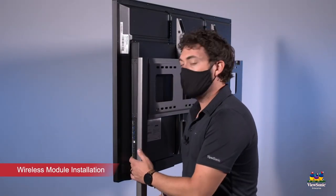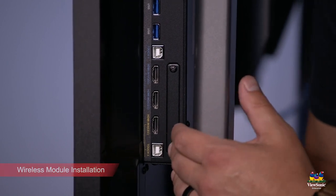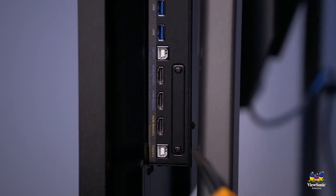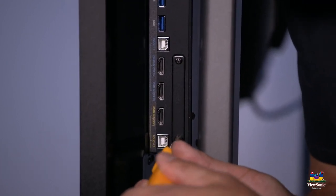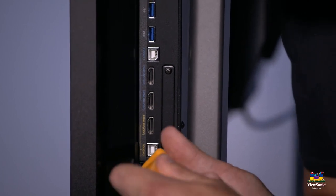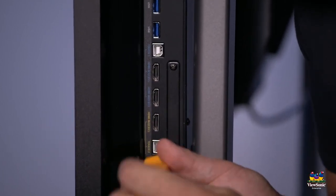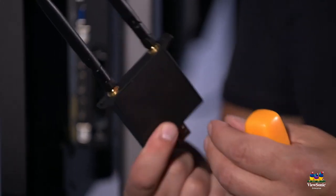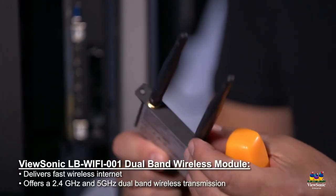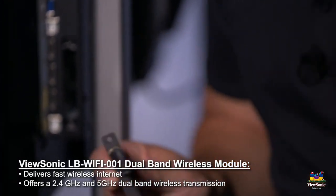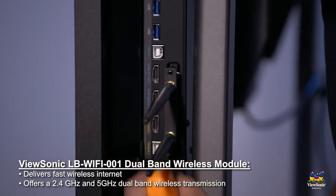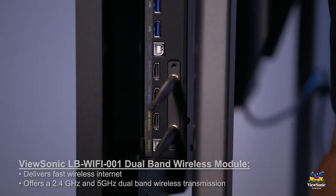To install the wireless card on the panel, you're going to need to find this cover on the bottom right side of the panel. We're going to remove these screws and then slide the wireless card in. This is what the wireless module looks like. Make sure the antennas are screwed on tightly and then slide it into the slot, then reattach the screws.